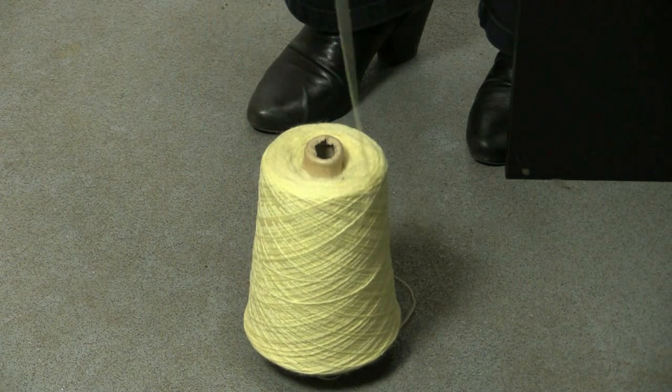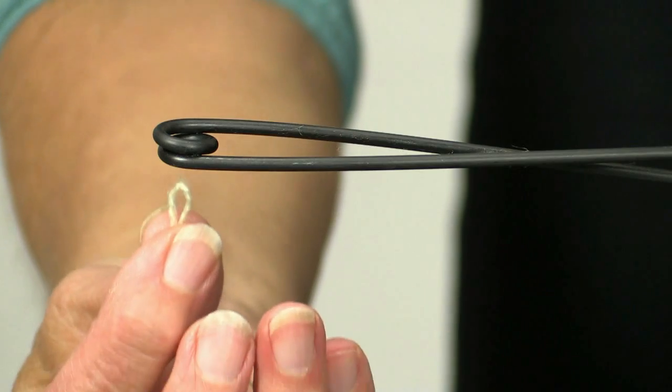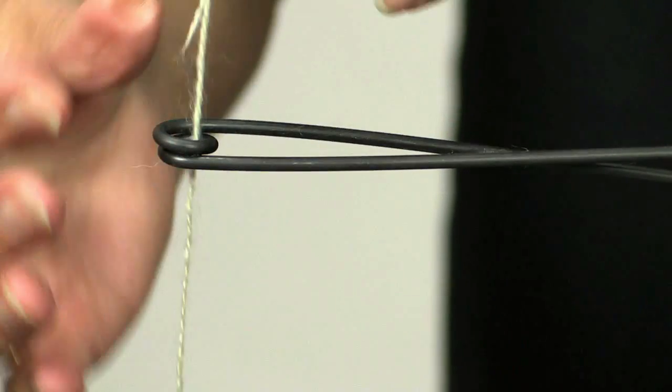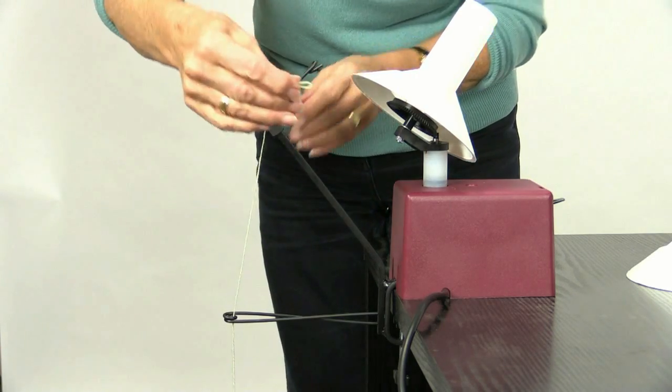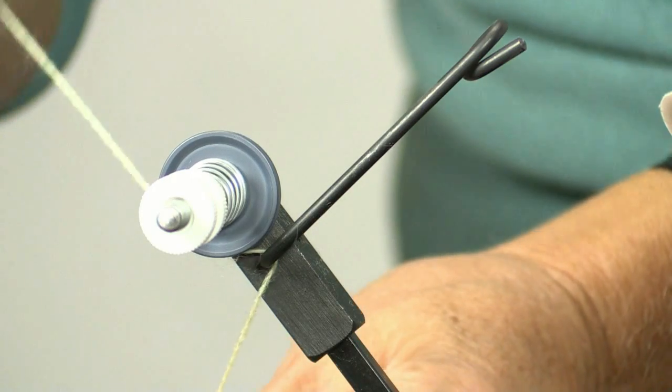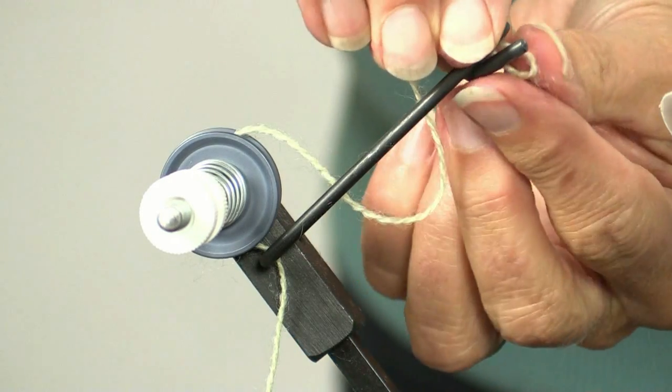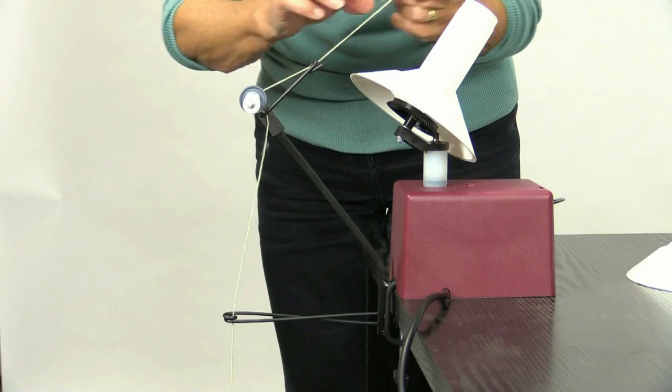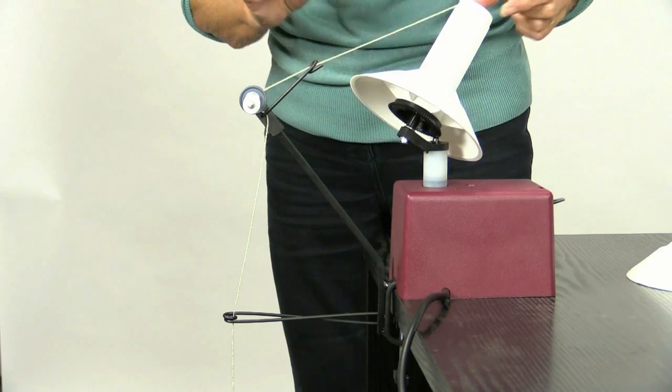The yarn is taken from the cone through the guide wire up to the tension. The yarn then goes over the top guide wire, round between the discs and then through the guide to the bobbin. Once the yarn is attached to the bobbin, you can switch on.